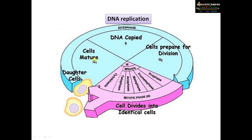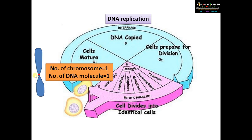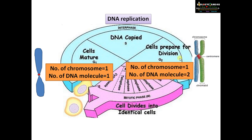This is the cell cycle. In G1 phase, the cell divides and grows and matures. The number of chromosomes is one and number of DNA molecules is one — this is before DNA replication. After DNA replication, in G2 phase, the number of chromosomes remains one but the number of DNA molecules is two. So remember: before mitosis or meiosis, the genetic content is doubled during DNA replication but the chromosome number remains the same.